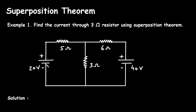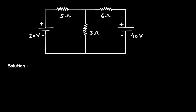As we can see, there are two voltage sources. When multiple sources are present, we can use superposition theorem. First we will consider the 20V voltage source and find the current through this 3 Ohm resistor, and after that we will use the 40V voltage source and find the current through this 3 Ohm resistor. Then according to the direction of current, we will add or subtract them.